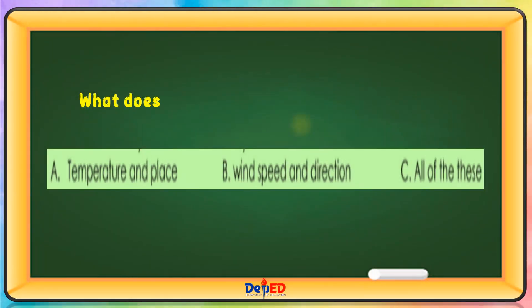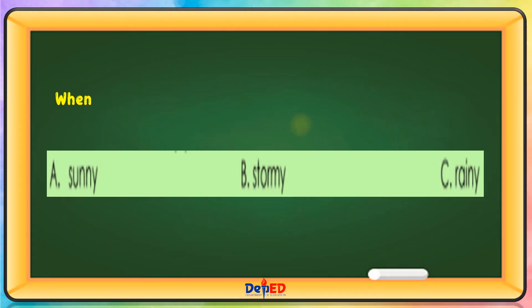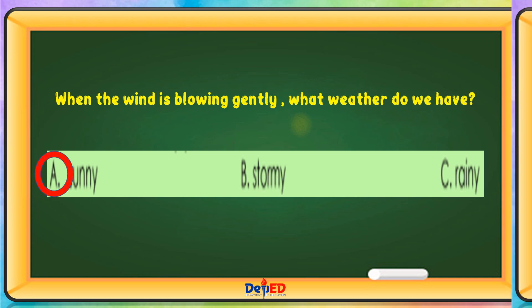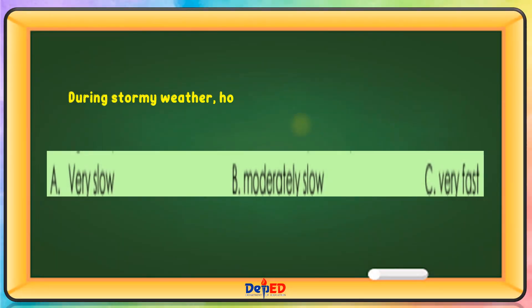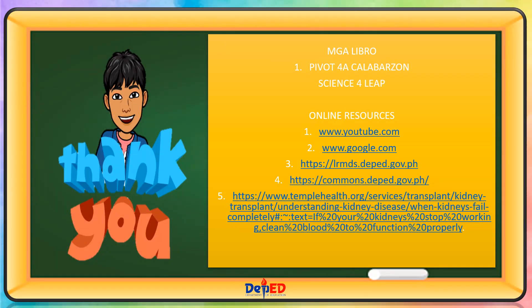What does the daily weather forecast tell you? The answer is C — all of these. When the wind is blowing gently, what weather do we have? The answer is A — sunny. During stormy weather, how does an anemometer spin its cups? The answer is C — very fast. Thank you for watching! Till our next science lesson. Goodbye!